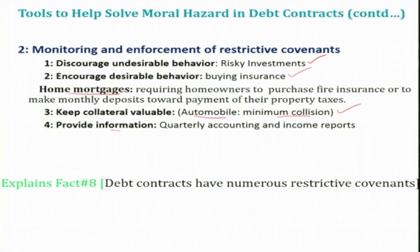Another tool is to provide information — specifically, quarterly accounting and income reports. The debt contract can require a borrowing firm to provide information about its activities periodically in the form of quarterly accounting and income reports, thereby making it easier for the lender to monitor the activities of the borrowing firm. The overall objective of all these things is to reduce the moral hazard problem. This explains why debt contracts have numerous restrictive covenants.